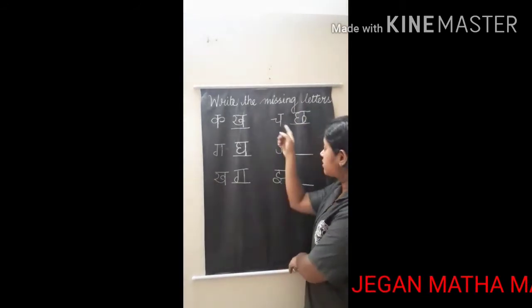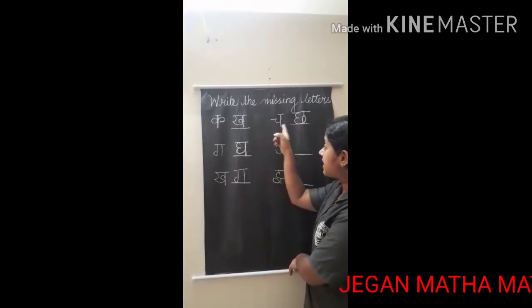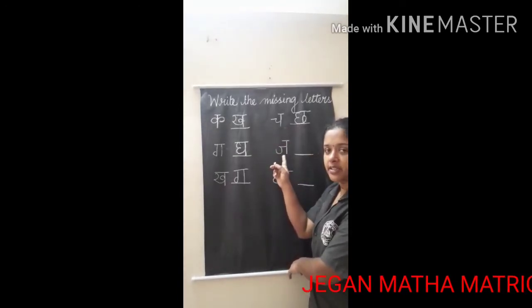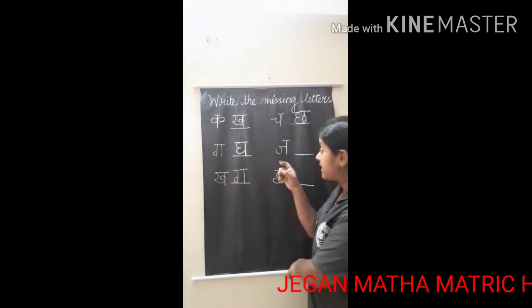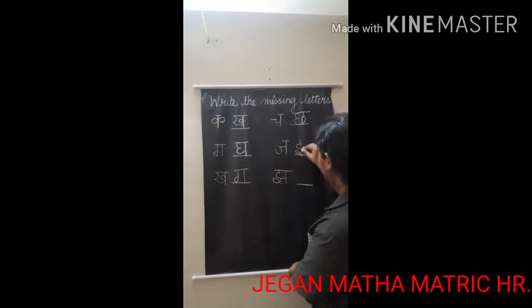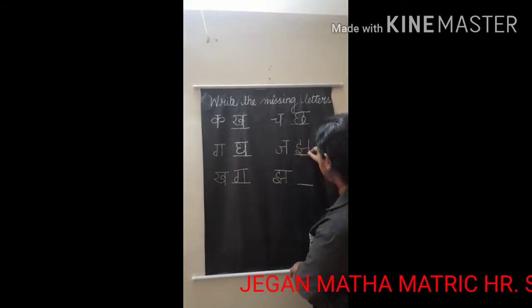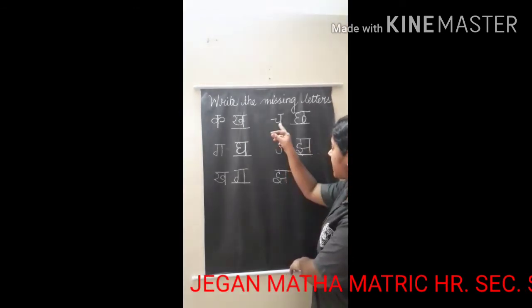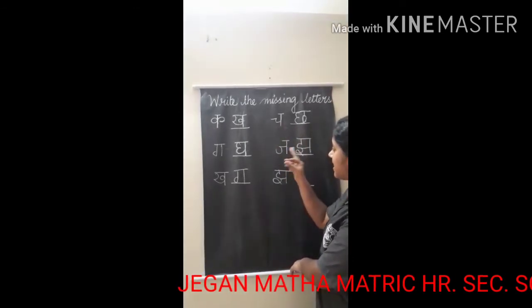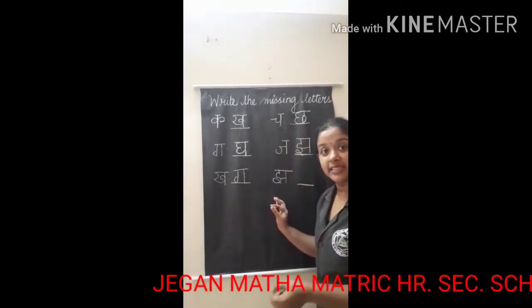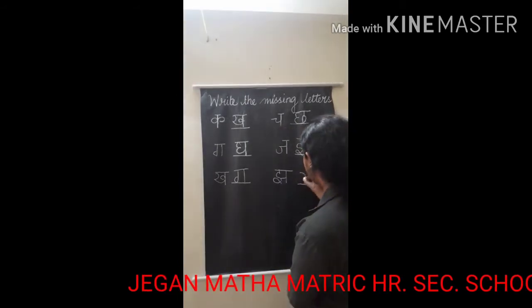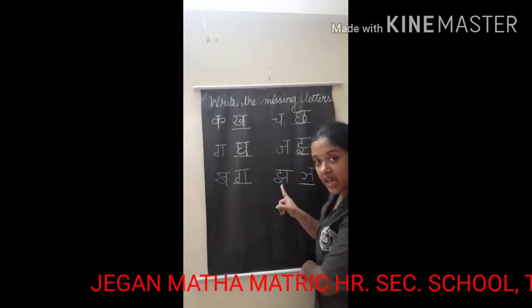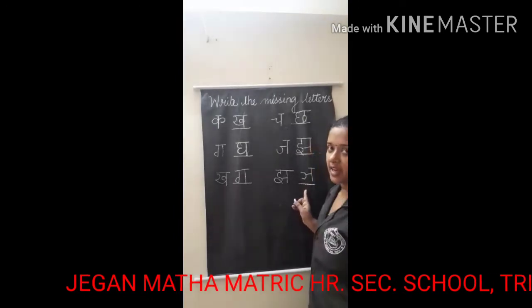Similarly, JA (ज) also follows. So after CHA (च), CHA (छ), then JA (ज). After the Vyanjan JA, the next Vyanjan is JHA (झ). See here, all are coming in the same way — CHA, CHA, JA, JA. The next one is NIYA (ञ). So after the Vyanjan JA, the next Vyanjan is NIYA.